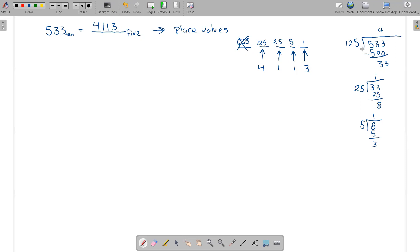So 533 base 10 is 4113 base 5 is what we just discovered. And we just do that kind of like thinking about counting back change. You start with the biggest place value and work your way down. So 625 was too big for this number. So I started with 125. So let's try that for a different number.